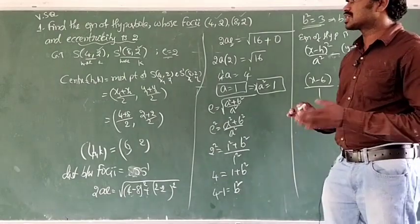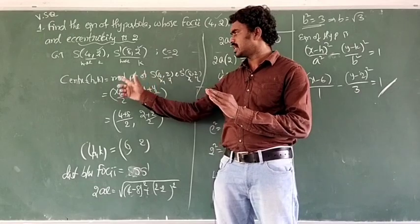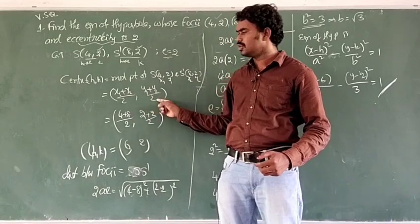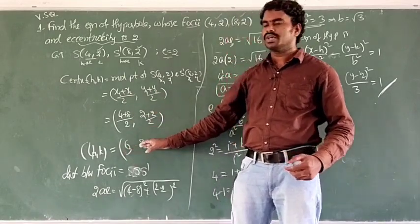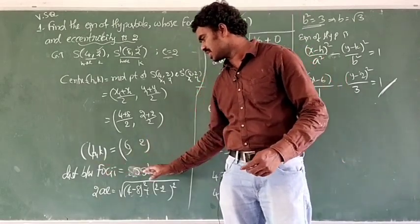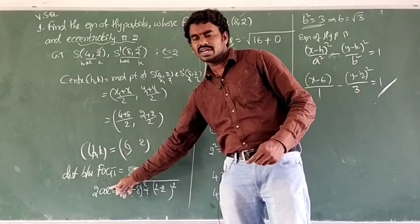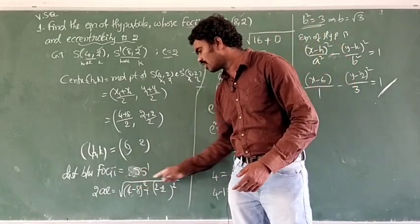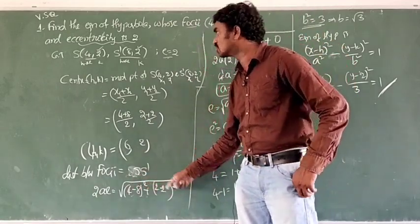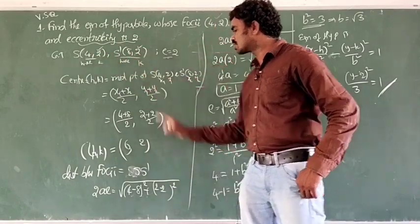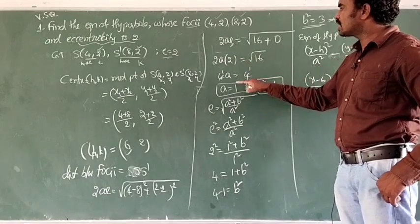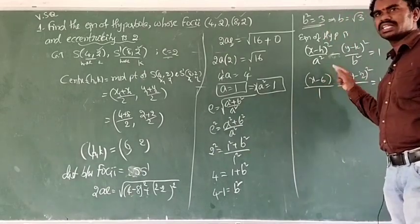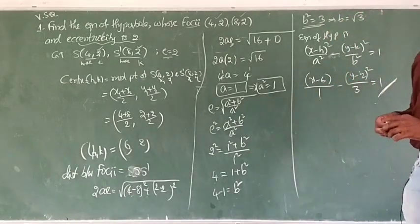To summarize Question 1: first find center as midpoint of the two foci to get (6,2). Then use the formula — distance between foci = 2ae — to find a=1. Then use the eccentricity formula E² = (a²+b²)/a² to find b²=3. Substitute all values to write the final equation.